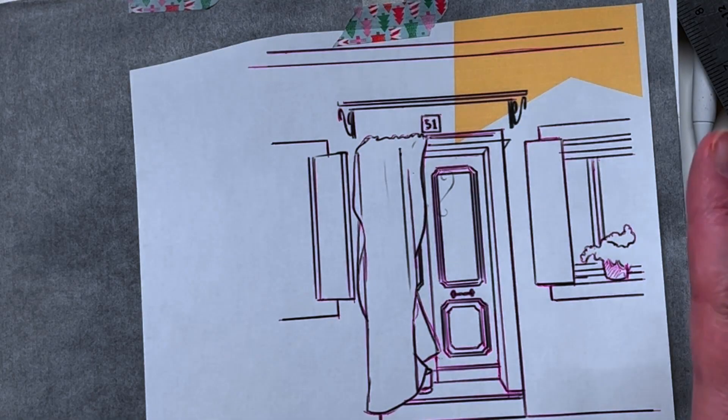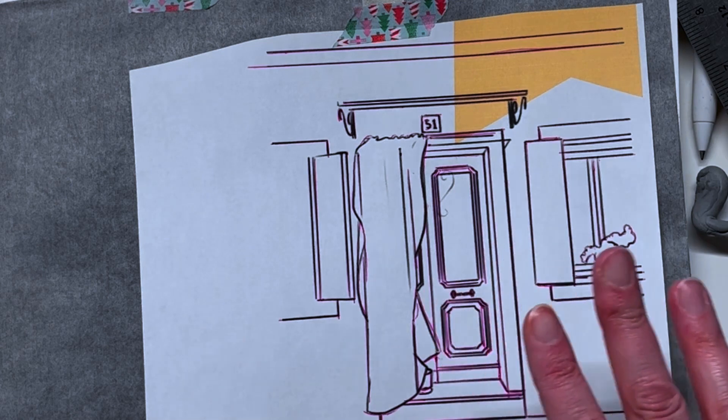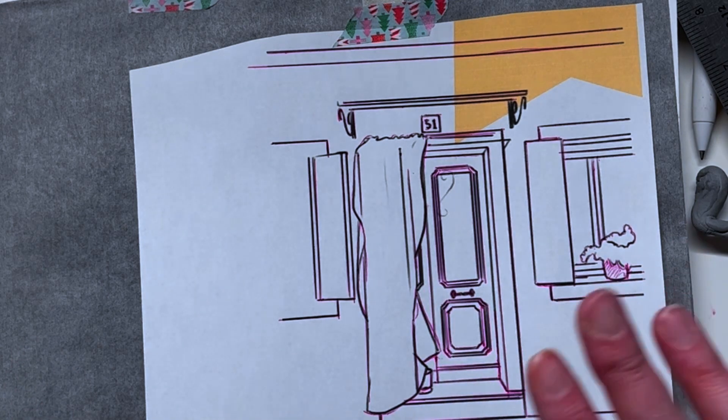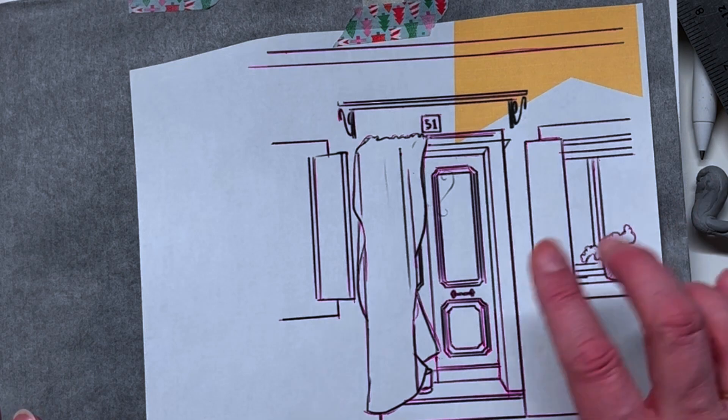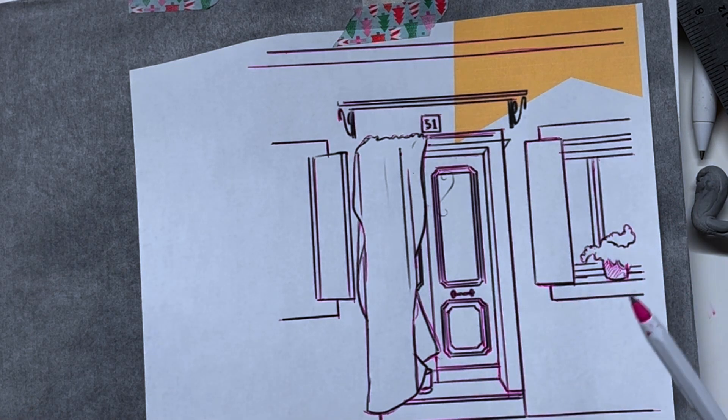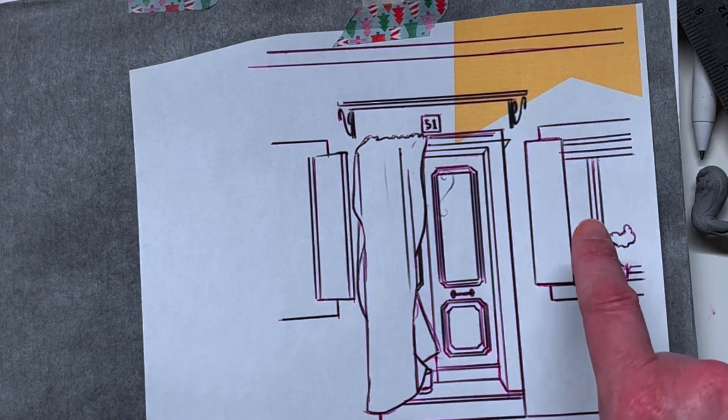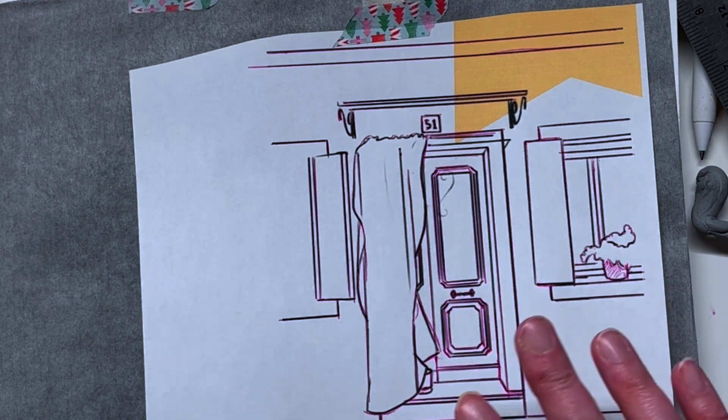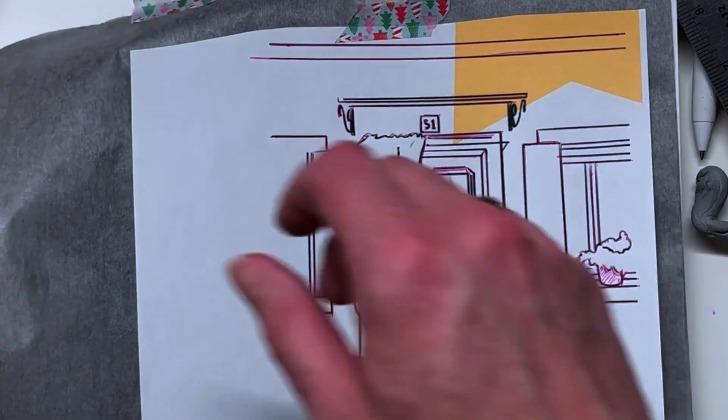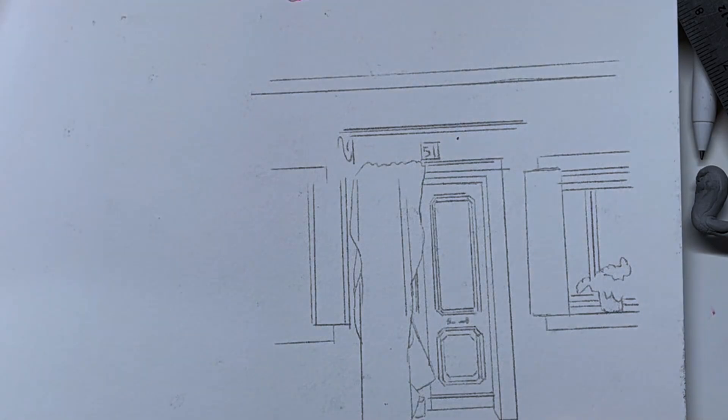Okay, so this is what it looks like when we have drawn on this transfer here on our drawing. This is why it's really handy to have a colored pen because you can see where you have and have not been. And when you remove this you can see the image that the graphite has left behind.